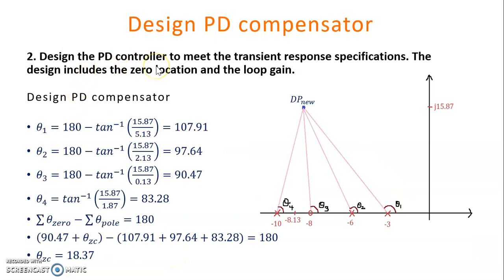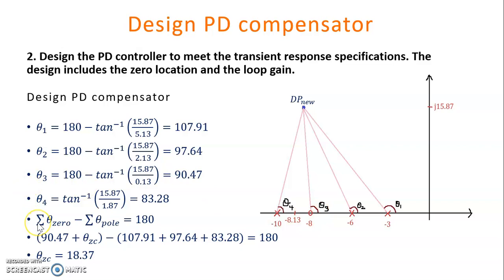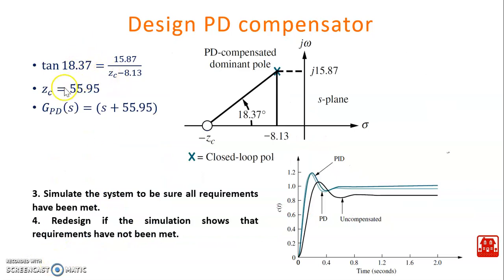The second step is to design the PD controller to meet the transient response specification, including the zero location and loop gain. We plot the pole-zero map of the open-loop transfer function, which has three poles at negative 3, negative 6, and negative 10, and a zero at negative 8. The new dominant pole is at minus 8.13 plus j15.87. We calculate the angle contribution from each pole and zero, then use the angle condition — sum of zero angles minus sum of pole angles equals 180 degrees — to determine the angle theta_Zc, and from that, the location of Zc for the PD controller.